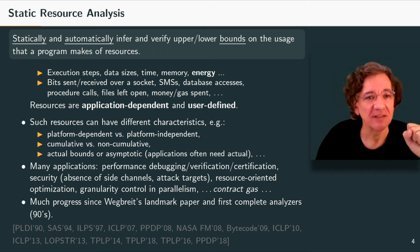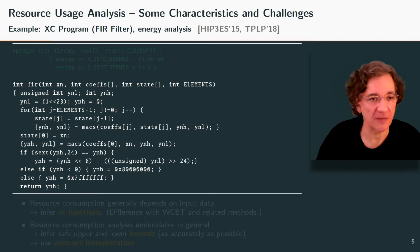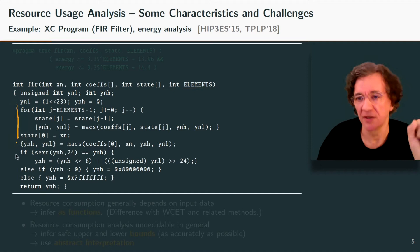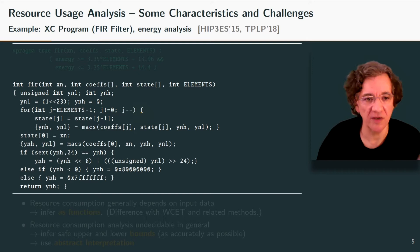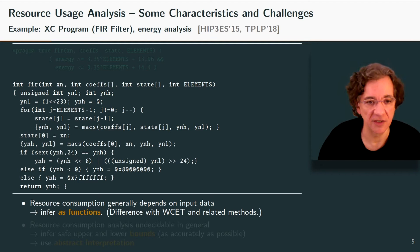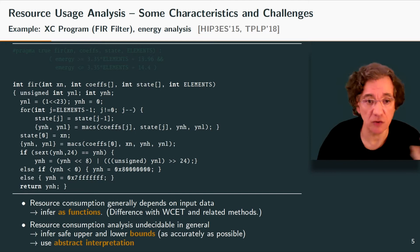Some characteristics and challenges of resource analysis. Consider a simple filter program in C. The interesting thing is it has an input value, elements, a loop that iterates over the elements, and some if-then-elses. The cost of this program depends on the value of elements — there is no way to produce a concrete number. So what we want to do is infer functions: the cost as a function of some characteristics of the input, which we call the metric or size of the inputs. In this case it would be the size of elements.